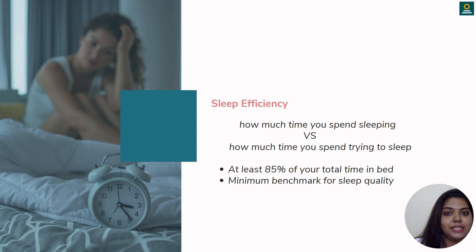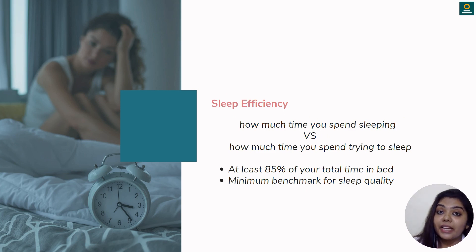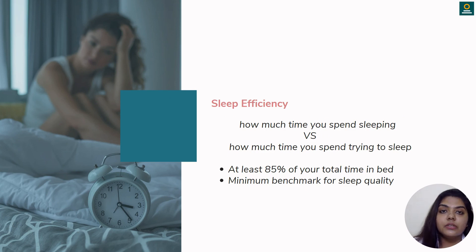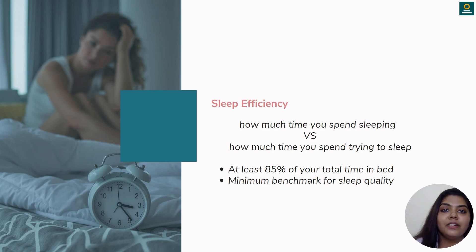The next one is sleep efficiency — how much time you spend sleeping versus how much time you spend trying to sleep while in bed. These two are different: you can be in deep sleep or you can be trying to fall asleep. Research shows that you must sleep at least 85% of your total time in bed, which is the minimum benchmark for proper sleep quality.